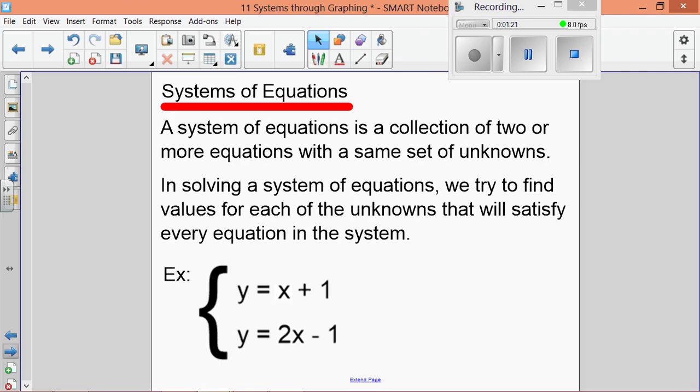A system of equations is a collection of two or more equations with the same set of unknowns. We could have three or four here; we're only going to focus on two. Our goal with systems of equations is to find values for each of the unknowns that will satisfy every equation in the system.